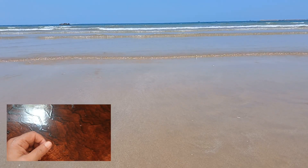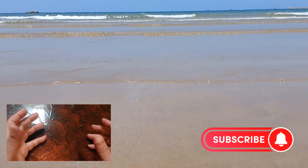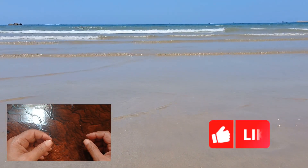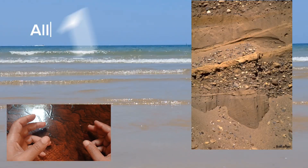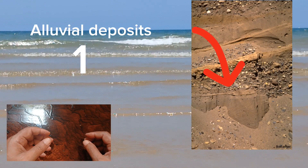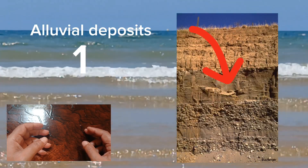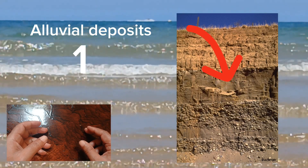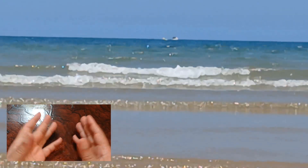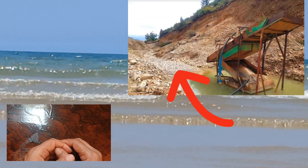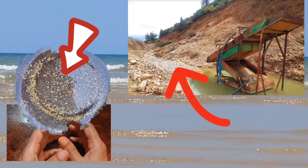Hello everyone, welcome back to my channel. Here are a few additional types of rocks and terrains that are commonly associated with gold. Alluvial deposits refer to gold that has been eroded from its source and transported by water. These deposits are often found in river beds, flood plains, and deltas, where gold particles have settled due to the action of water.